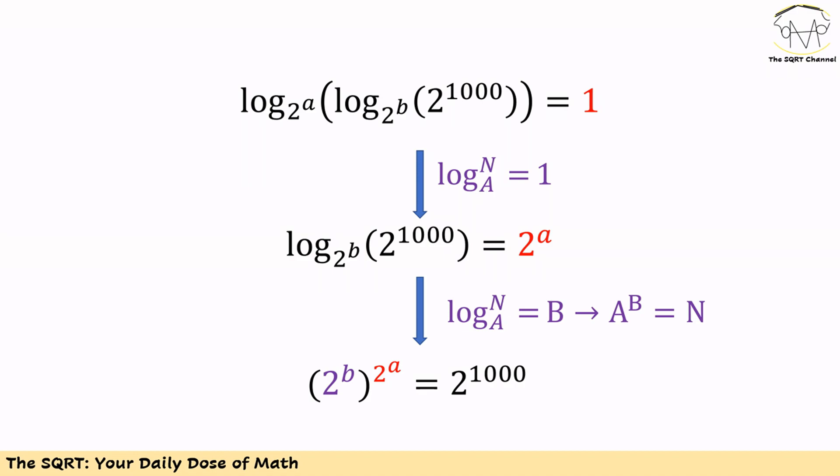At the end, we have log of 2^1000 in base 2^b equal to 2^a. Now we want to simplify it further.